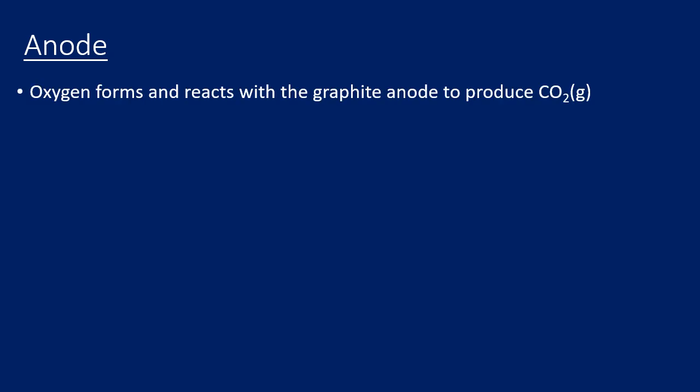So let's take a look at what happens at the anode and the cathode. At the anode, oxygen is formed. Now what actually happens is the oxygen formed will react with the graphite anode to produce CO2 gas. Remember, graphite is just carbon, so the carbon anode will react with the oxygen that's formed to produce carbon dioxide. Now what this means is that those anodes actually deteriorate and would need replacing eventually because they will get smaller as they react with the oxygen that's formed. We also get hydrogen fluoride formed at the anode, and that's due to the cryolite that's involved.